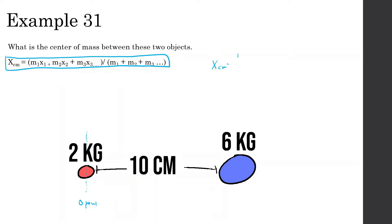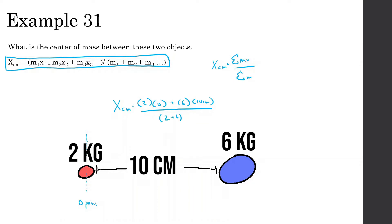The formula is: center of mass equals the sum of all (mass times position) divided by the sum of all mass. So center of mass equals m1, which is 2 kilograms, times its position — it's right at the zero point, so position 0 — plus the 6-kilogram object, which is 10 centimeters away from the zero point. Divide by 2 plus 6. This gives us 7.5 centimeters. So the center of mass of these two objects is around this point right here.